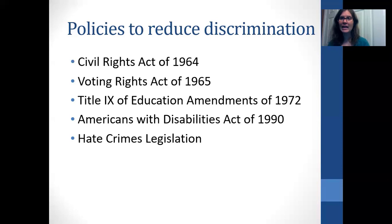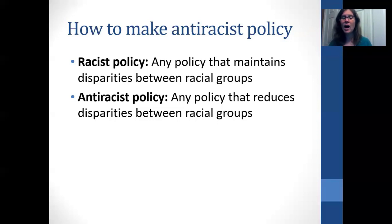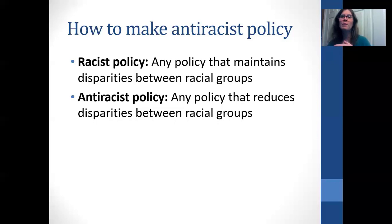Moving forward, we should consider how to ensure policies are anti-racist and anti-discriminatory. These definitions come from Ibram X. Kendi's book How to Be an Anti-Racist, which lays out that there are racist policies and anti-racist policies — no neutral policy exists when it comes to race. That's because a policy is either helping to make racial disparities worse or helping to make them better.